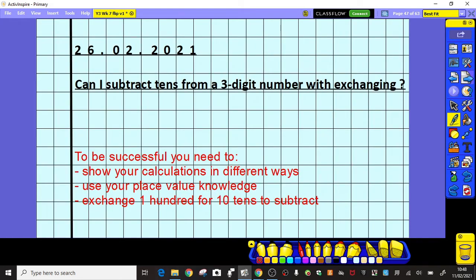For the main part of our maths lesson today, we're going to be subtracting 10s from a 3-digit number with exchanging. We did adding 10s yesterday with exchanging, and today we're going to be subtracting 10s. So we need to be able to show our calculations in different ways, use our place value knowledge, and exchange 100 for 10 10s. Yesterday you were exchanging 10 10s into 100, today we're exchanging 100 into 10 10s.